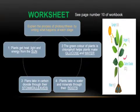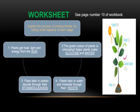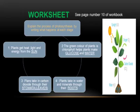Now we have to solve the worksheet on page number 10. Explain the process of photosynthesis by writing what happens at each stage. Number 1: Plants get heat, light, and energy from the sun. Number 2: The green colour of plants is chlorophyll. Chlorophyll helps plants make glucose and water. Number 3: Plants take in carbon dioxide through their stomata. Number 4: Plants take in water and minerals through their roots.